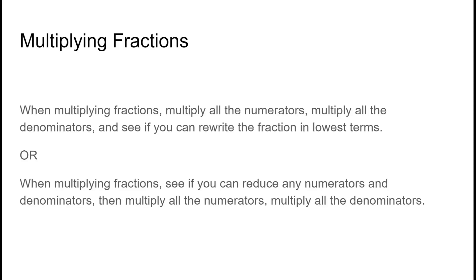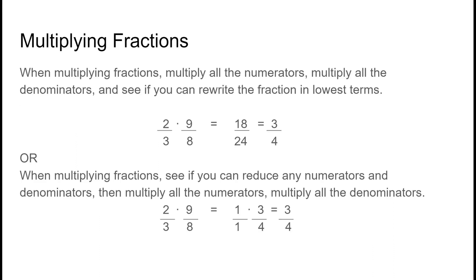Now we're going to move on to multiplying fractions. There are two ways to multiply fractions. You can simply multiply all the numerators and all the denominators, then put the result in lowest terms. Or you can reduce at the beginning by reducing numerators with denominators, and then multiply across. I'm going to show you both ways.